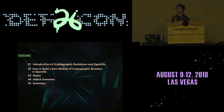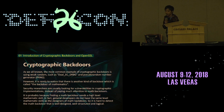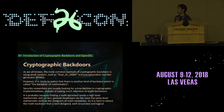In the first part, we think this kind of backdoor can be used in supply chain attack scenarios. So firstly, as we all know, the most common example of cryptographic backdoor is using weak random, such as Dual EC DRBG and random number generators.